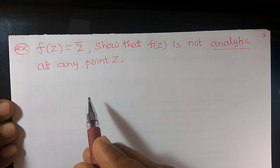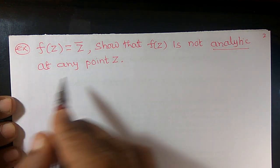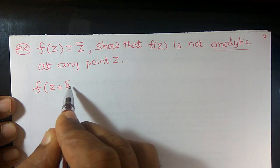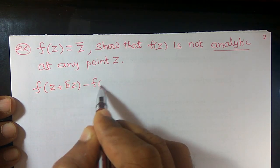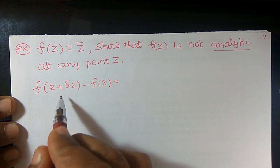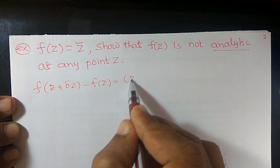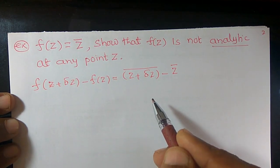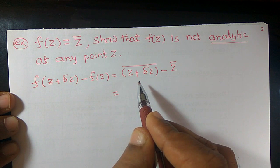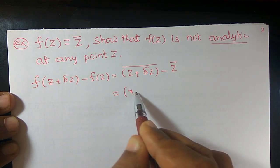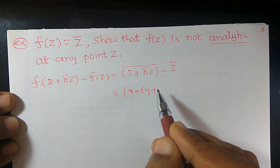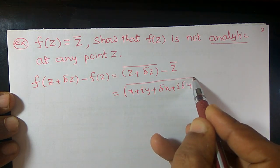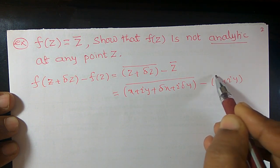First, I want to verify the limit of the function. It is given that f(z) = z̄. So f(z + Δz) − f(z) equals (z + Δz)̄ − f(z), where f(z) = z̄. Since z = x + iy, we have (z + Δz)̄ = (x + iy + Δx + iΔy)̄ minus (x + iy)̄.